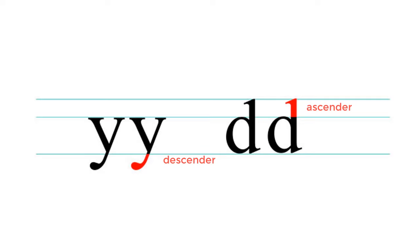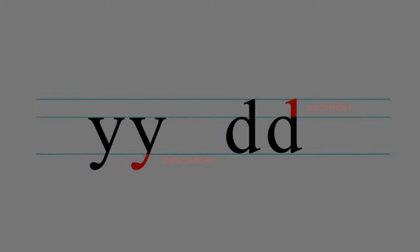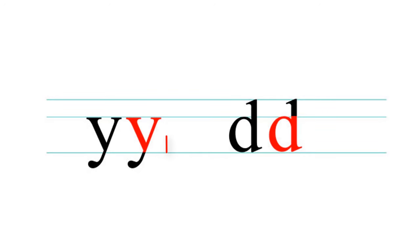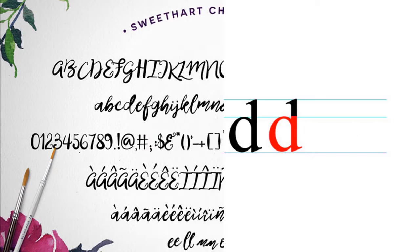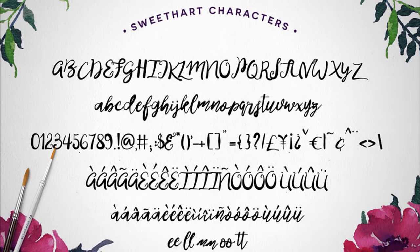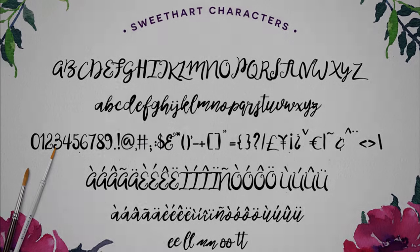So earlier, when we spoke about the ascender and descender strokes, we talked about the main body of the letter. This body, specifically in reference to lowercase letters, is known as the X height. The X height will change depending on the font style you choose. Script fonts, for instance, like many calligraphy styles, usually have a smaller X height to help each letter flow into the next as you write.